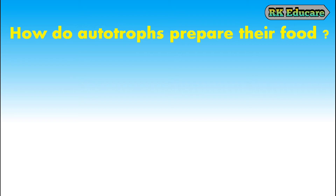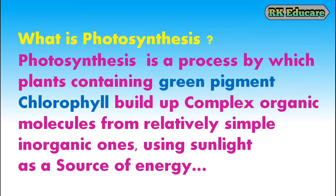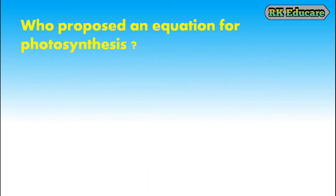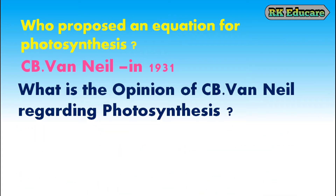How do autotrophs prepare their food? Autotrophs prepare their own food materials by a process called photosynthesis. What is photosynthesis? Photosynthesis is a process by which plants containing green pigment chlorophyll build up complex organic molecules from relatively simple inorganic ones using sunlight as a source of energy. Who proposed an equation for photosynthesis? C.B. van Niel proposed an equation for photosynthesis in the year 1931.